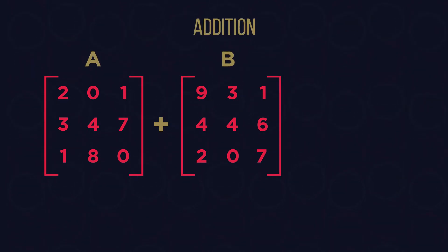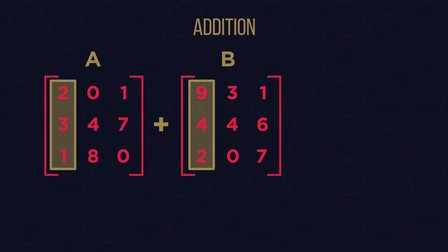After we have made sure that the two have the same dimensions, we can then proceed with the actual addition, which is a simple and straightforward process. The rule dictates that we must add together the corresponding terms. What this means is that you just have to add up the elements in the first row and first column of matrix A with the ones in the same position in matrix B. These elements will occupy the same position in the resulting matrix A plus B.